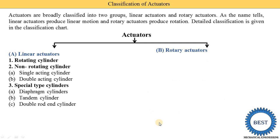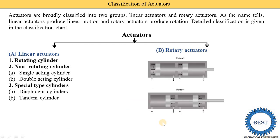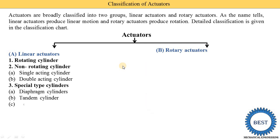Next is the double rod end cylinder. Double rod end cylinder means there is a rod on both sides of the piston. In the earlier case, there was a rod on only one side of the piston. When there is a rod on both sides of the piston, it is called a double rod end cylinder.